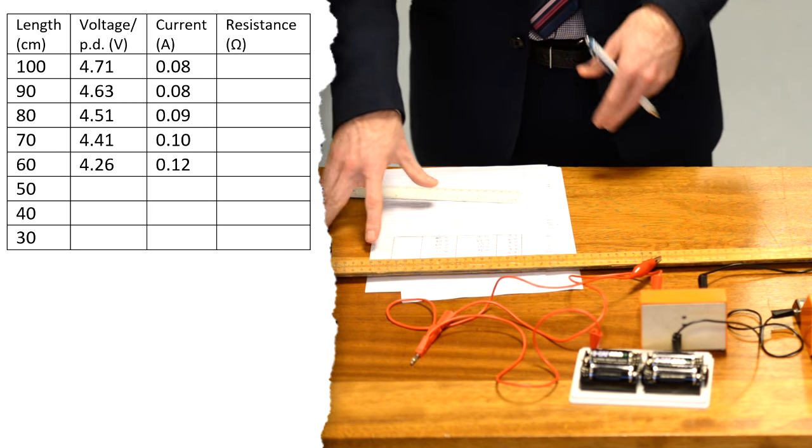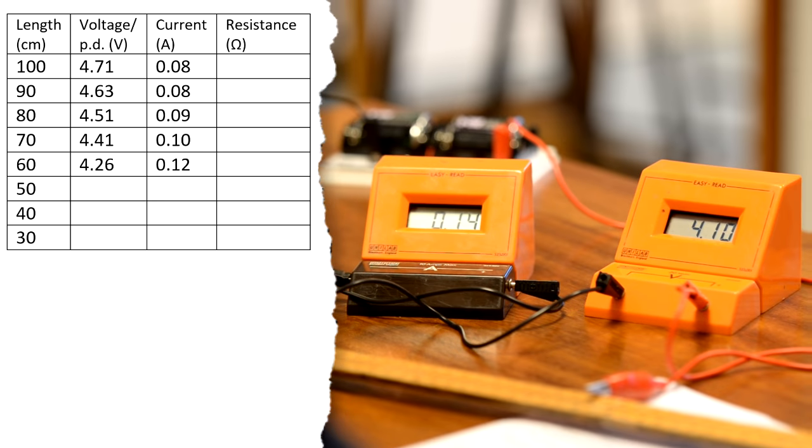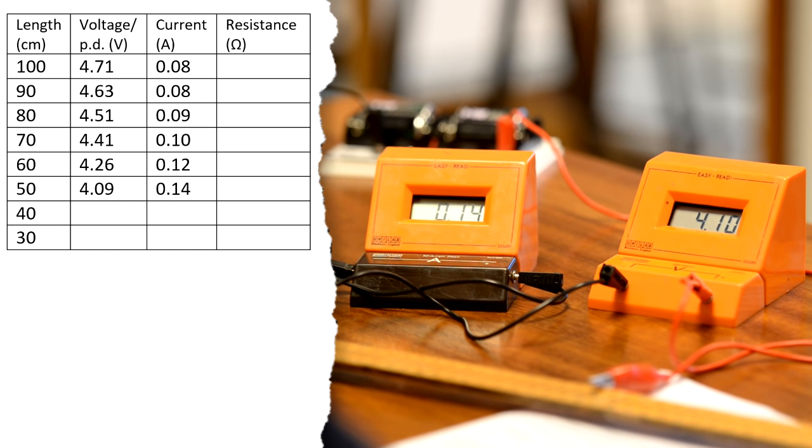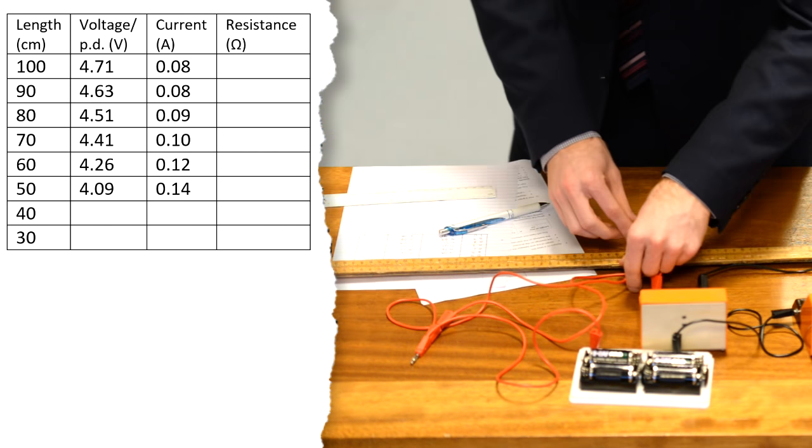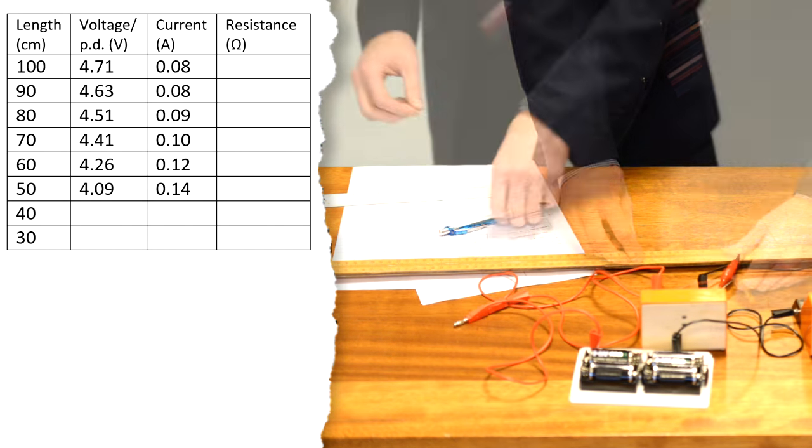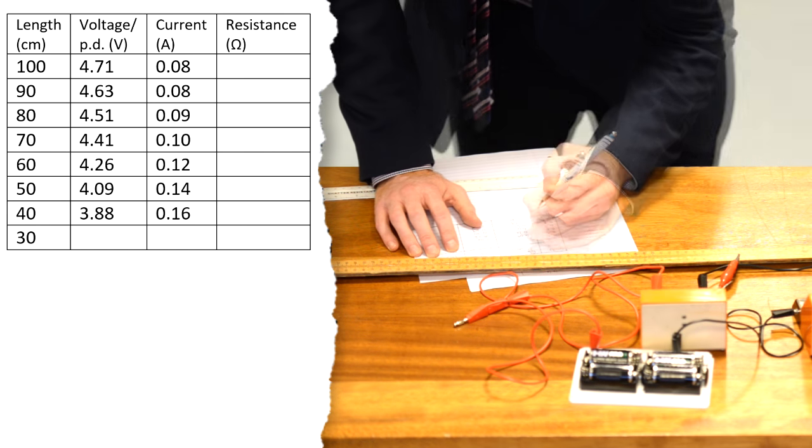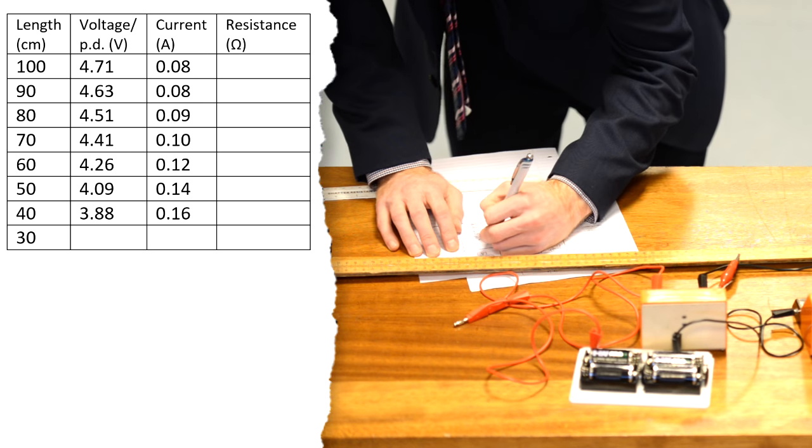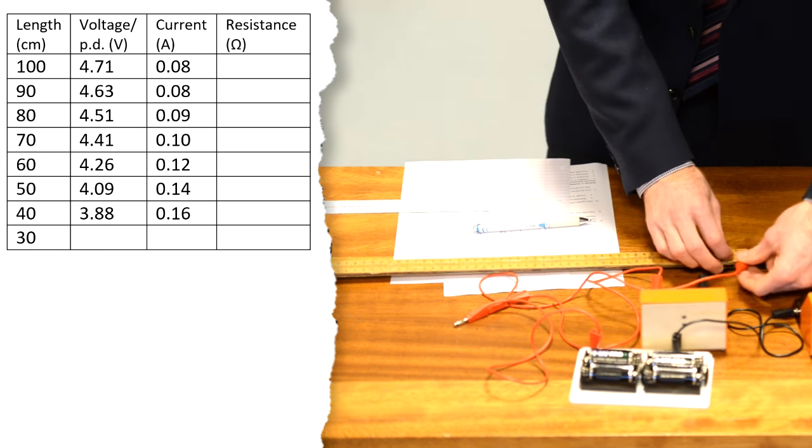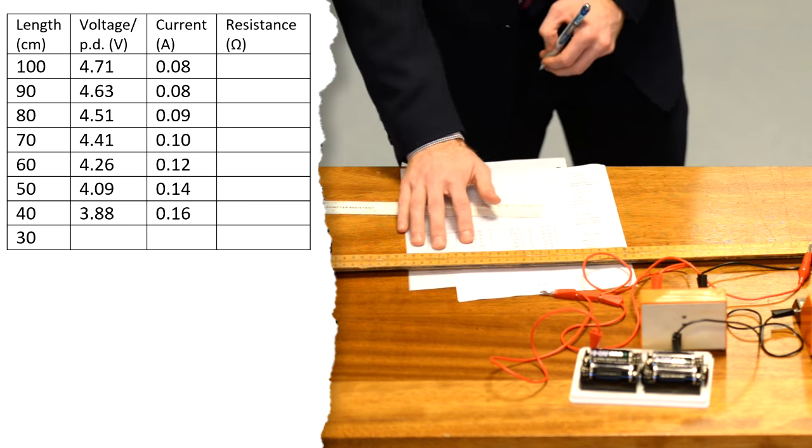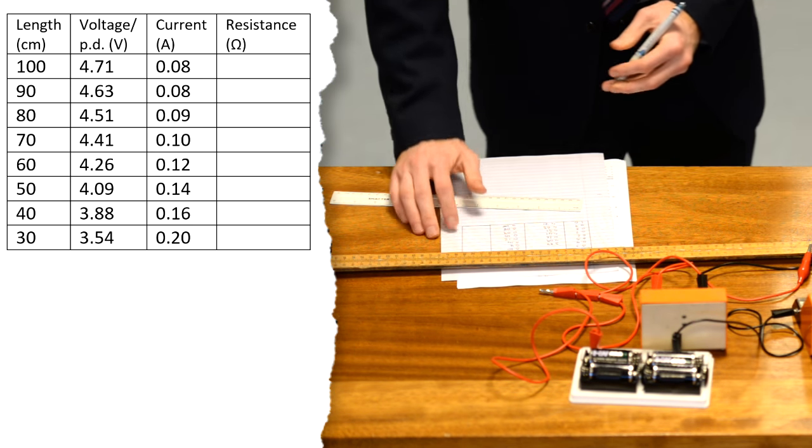Move along to 50 centimeters, we've now got a voltage reading of 4.09 volts and a current of 0.14 amps. At 40 centimeters we have a voltage of 3.88 volts and a current of 0.16 amps. And for the last measurement at 30 centimeters the current has risen to 0.20 amps while the potential difference has dropped to 3.54 volts.